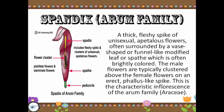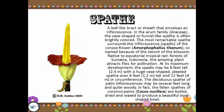Next, we have the spadix, also called the arum family — a thick, fleshy spike of unisexual apetalous flowers often surrounded by a veil-shaped or funnel-like modified leaf called a spathe, which is often brightly colored. The male flowers are typically clustered above the female flowers on an erect, bolster-like spike. This is the characteristic inflorescence of the arum family. The spathe is a lip-like bract that envelopes the inflorescence in the arum family and is often brightly colored.